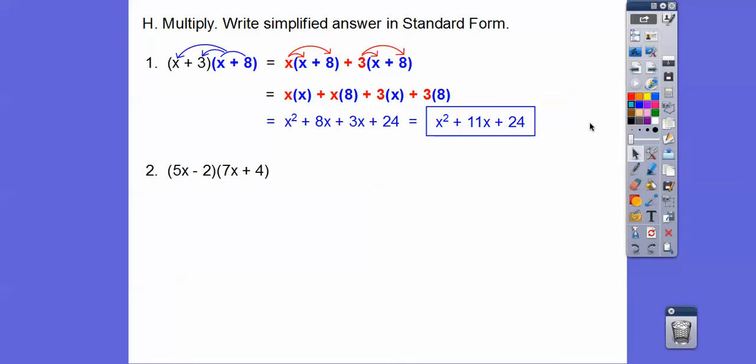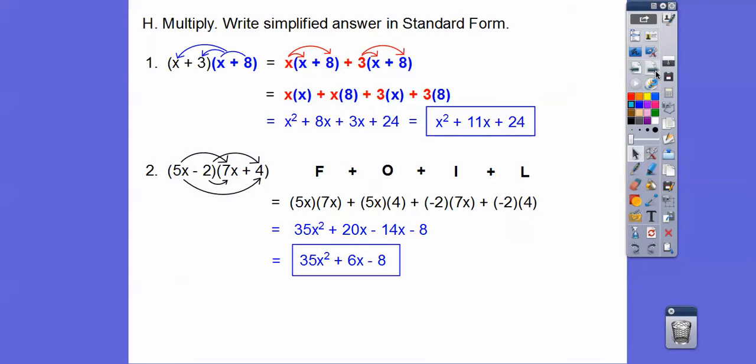This one I'm going to foil. First times first is 5x times 7x. And then outer times outer, 5x times 4. And then inner times inner, negative 2 times 7x. And then finally, last times last, negative 2 times 4. So we foiled it. F-O-I-L. The F stands for first times first, outer times outer, inner times inner, last times last. So this is 35x squared plus 20x minus 14x minus 8. And then combine like terms. You should get that.